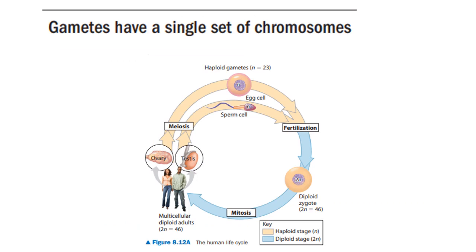Here is the human life cycle. In the diagram, the sperm is a gamete that comes from the male, and the egg is a gamete that comes from the female. After fertilization of the female gamete, there is the formation of a zygote. The zygote then divides mitotically to produce a multicellular organism.